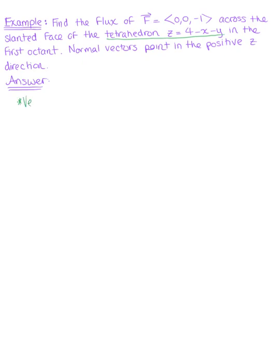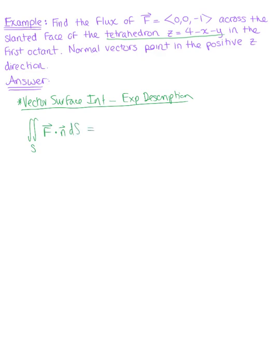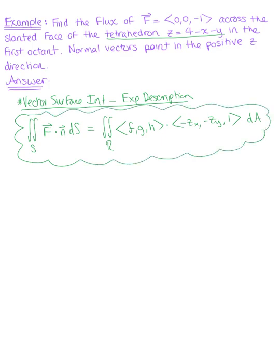We start by recalling that the vector surface integral of an explicit description of our surface is computed as follows. We have the double integral over our surface S of the vector field dotted with the normal vector, and we convert this to the double integral over our region R of the vector field F = (f, g, h) dotted with the components of the normal vector: minus the partial derivative of z with respect to x, minus the partial derivative of z with respect to y, and 1, times dA.